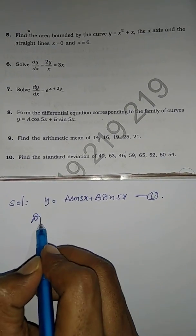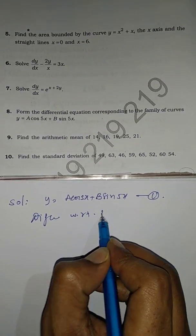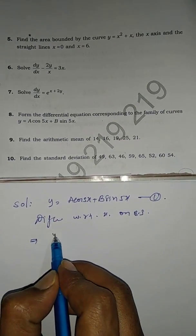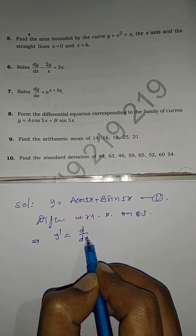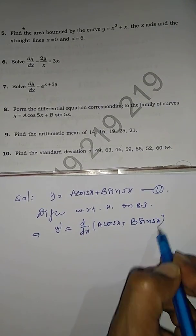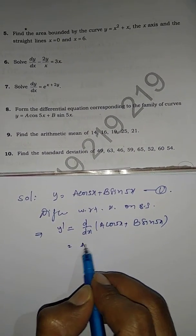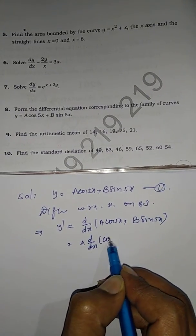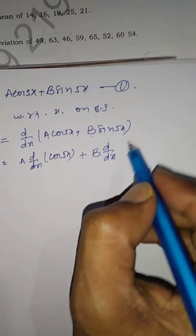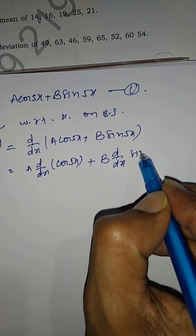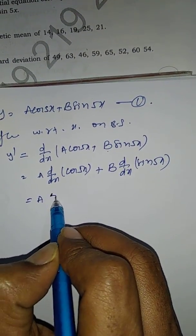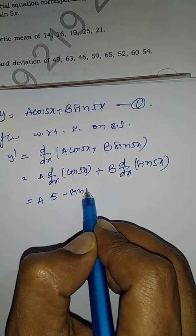Now differentiate both sides with respect to x. y' = d/dx of (a·cos(5x) + b·sin(5x)). Since a and b are constants, we take them outside: a·(d/dx of cos(5x)) + b·(d/dx of sin(5x)).